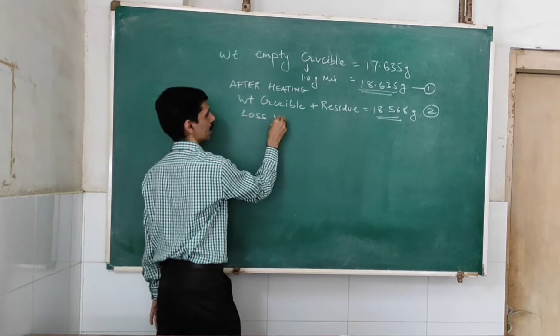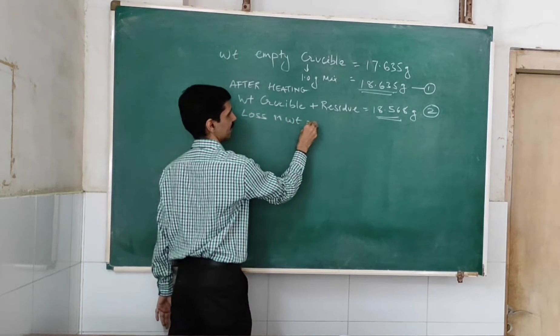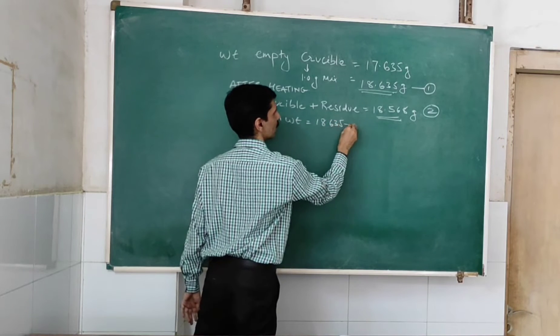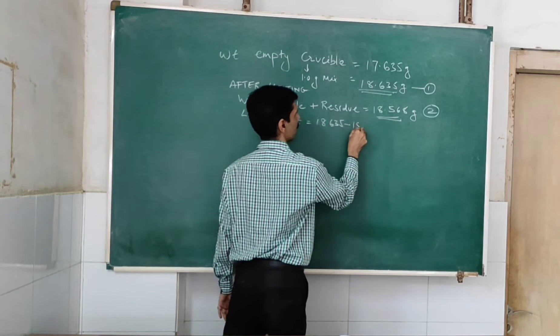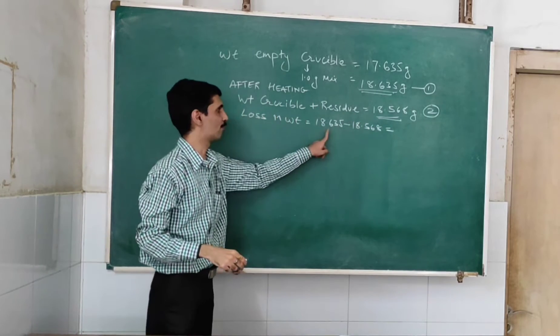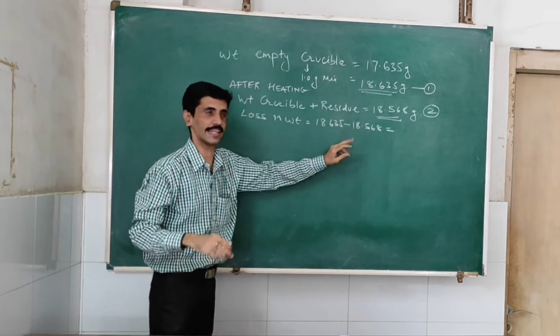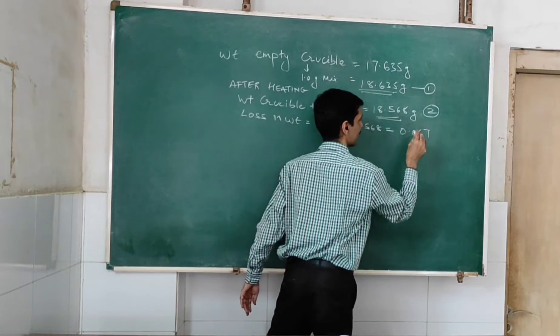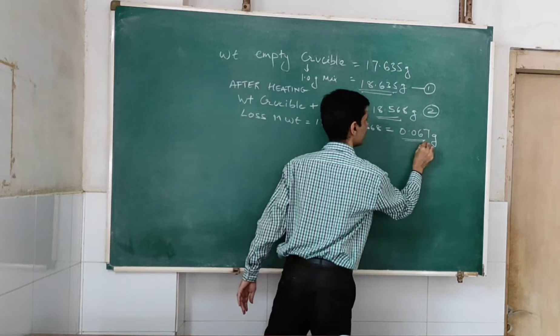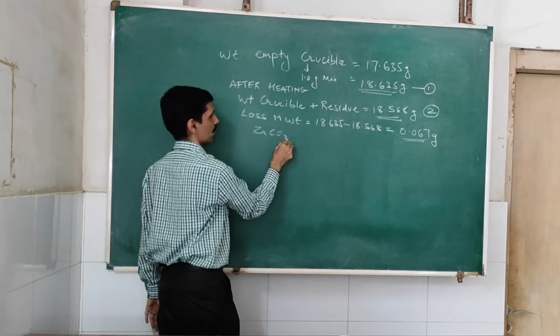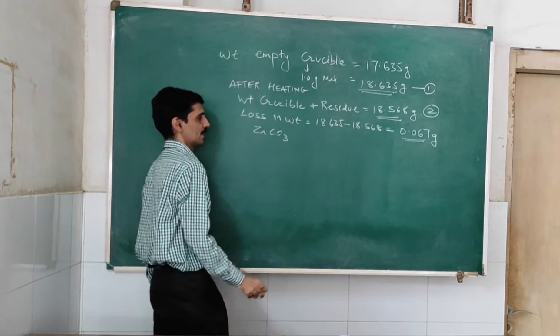So therefore, loss in weight is equal to 18.635 minus 18.568, before heating and after heating. And that will give you 0.067 grams. This is the loss in weight. Now my dear friends, when you talk about zinc carbonate, evolution takes place with respect to what? Carbon dioxide.